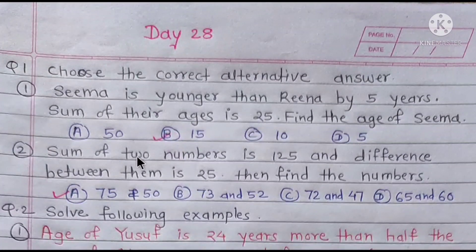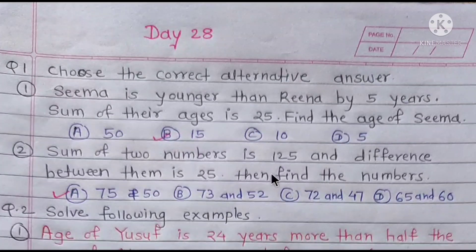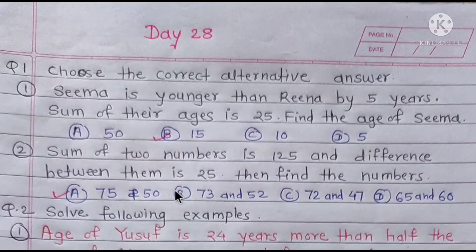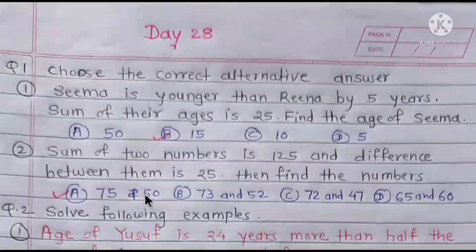Second MCQ: sum of 2 numbers is 125 and the difference between them is 25. Find the numbers. The sum is 125 and difference is 25, so you have to add the numbers from the options — the first option gives 125 and difference 25.